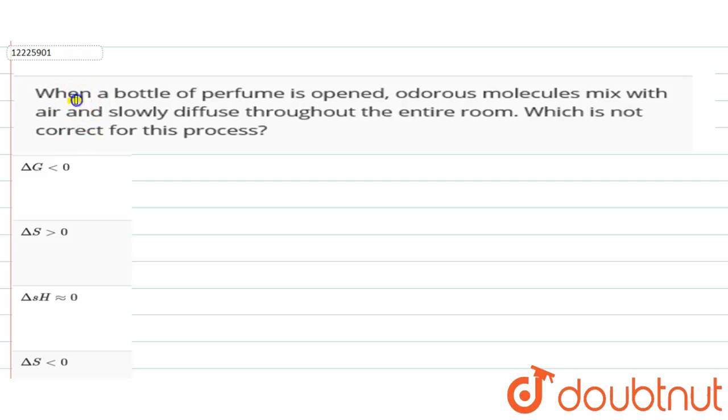What is this question? When a bottle of perfume is opened, odorous molecules mix with air. The molecules from the bottle mix with air and slowly diffuse throughout the entire room. Which is not correct for this process?